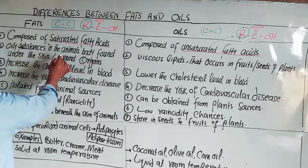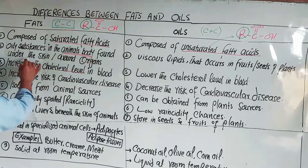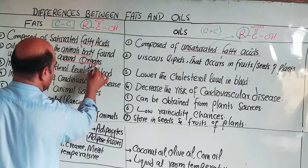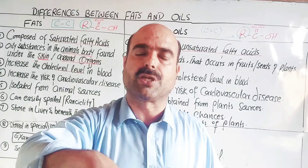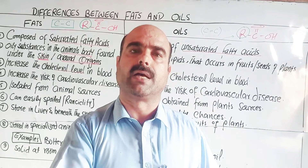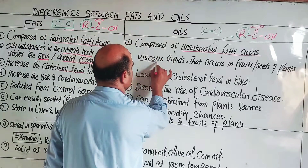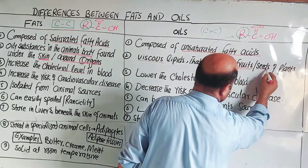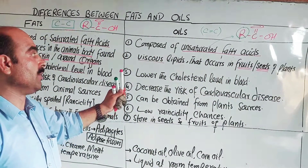Second difference: fats are substances found in the animal body. They are found deposited under the skin and around delicate organs like the heart, kidney, and liver. The fat layer provides protection from injuries, shocks, and other damage to animals. Oils, on the other hand, are lipids that occur in the fruits and seeds of plants. So the basic difference is in their source: fats come from animals and oils come from plants.